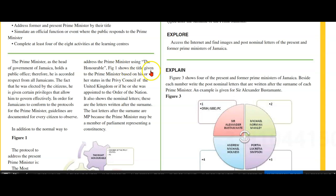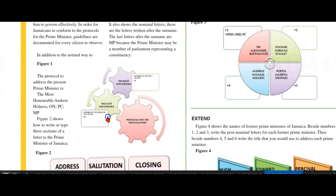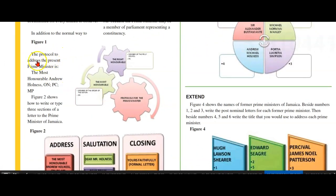In addition to the normal way to address the Prime Minister using 'the Honourable,' Figure 1 shows the title given to the Prime Minister based on his or her status in the Privy Council of the United Kingdom, or if he or she was appointed the Order of the Nation. It also shows the nominal letters — the letters written after the surname. The last letters after the surname are MP, because the Prime Minister may be a Member of Parliament representing a constituency. The protocol to address the present Prime Minister is: the Most Honourable Andrew Holness, ON, PCE, MP.